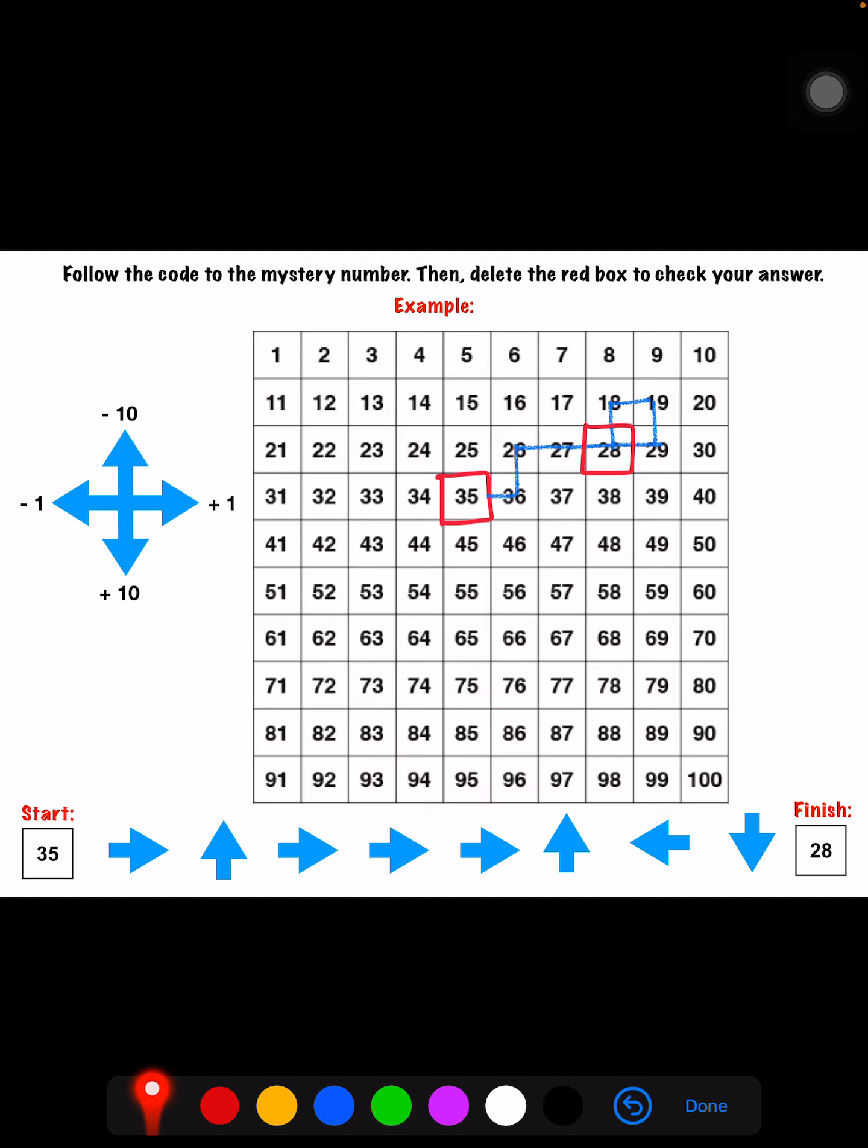Then you're going to look at the bottom of the page and notice that here there are some blue arrows in all different directions. This is the code. My first step right here in the code is an arrow to the right. It's pointing to the right. So I'm going to go to my number that I'm starting with, 35, and I go one space to the right.